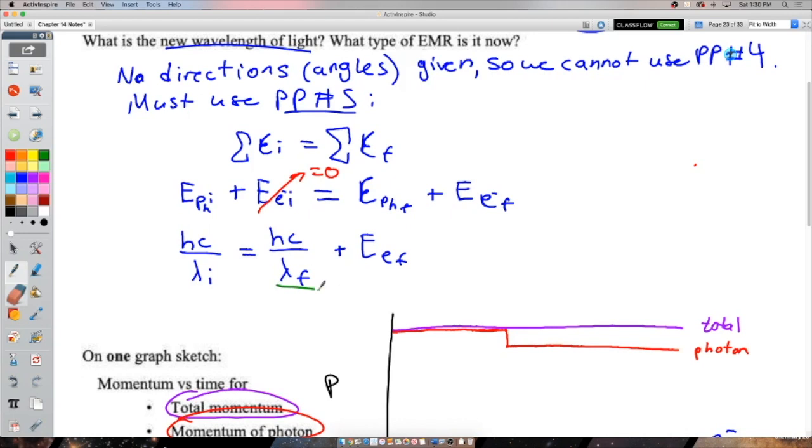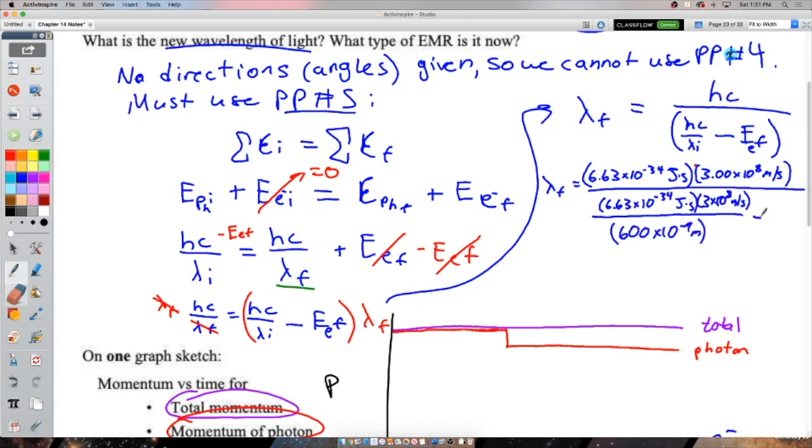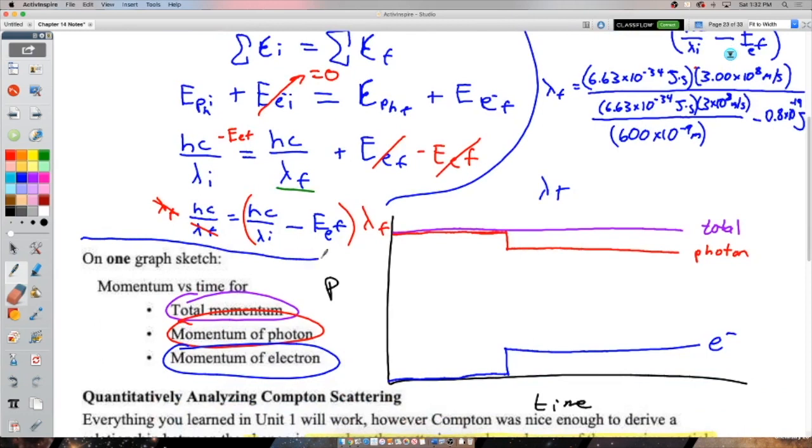So the initial wavelength is what determines the initial energy, which means energy of the photon final is HC over lambda final. And we were given the energy of the electron. So we can just leave it like that. We don't even need to mv squared this. So looking for the final wavelength, that's what I want to know. So let's do some manipulation here. Get that out of the denominator because we'll never solve for it while it's down there. And then we'll just divide both sides by this whole bracket. Nothing wrong with that. Might not be the prettiest solution, but it'll work. And we're ready to plug in.